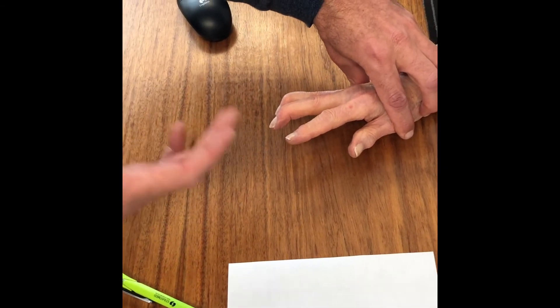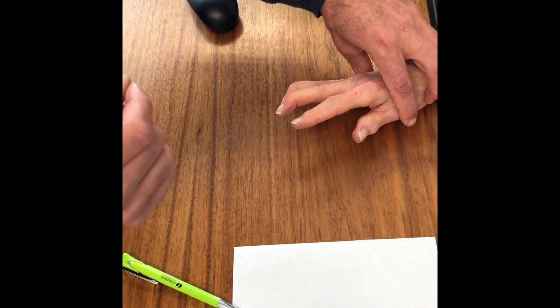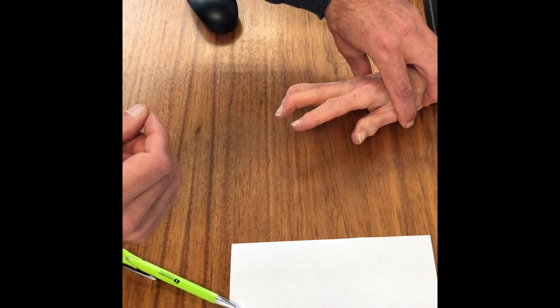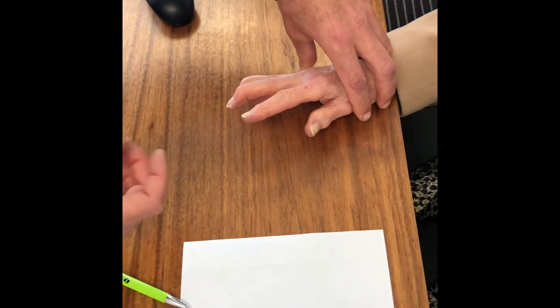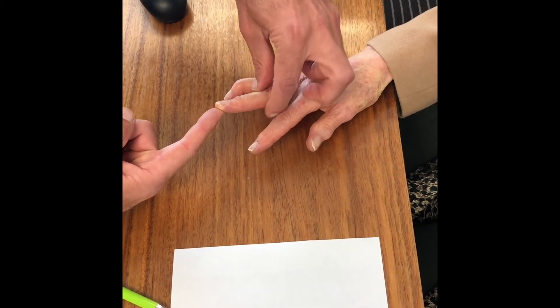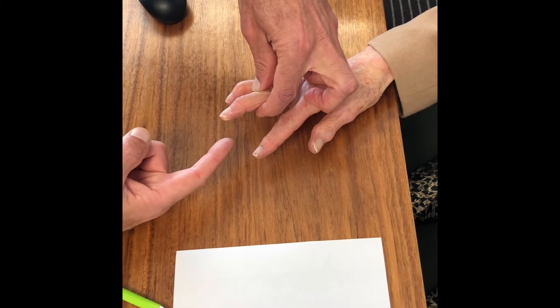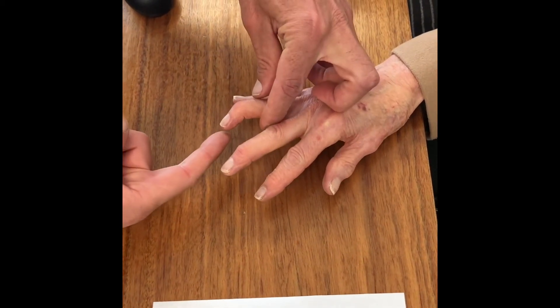Now when a patient can't fully extend, the question you have to ask is that a fixed flexion deformity, or is it an inability to extend, called an extensor lag? So here you can see with this patient, she has full passive extension. I can easily extend her, but when I let go, it droops down again. That's an extensor lag as opposed to a fixed flexion deformity.